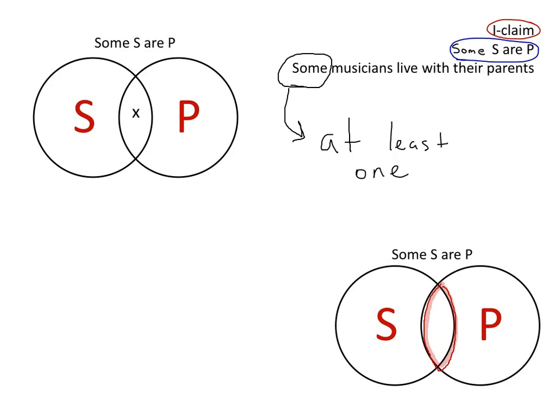And we represent the at least one member with an X. And the X is going to go in the overlapping region because what we're saying is at least one member of the S class is in the P class. So we're referring to that middle region, that overlapping region, and we're using the X to refer to the 'some' here.